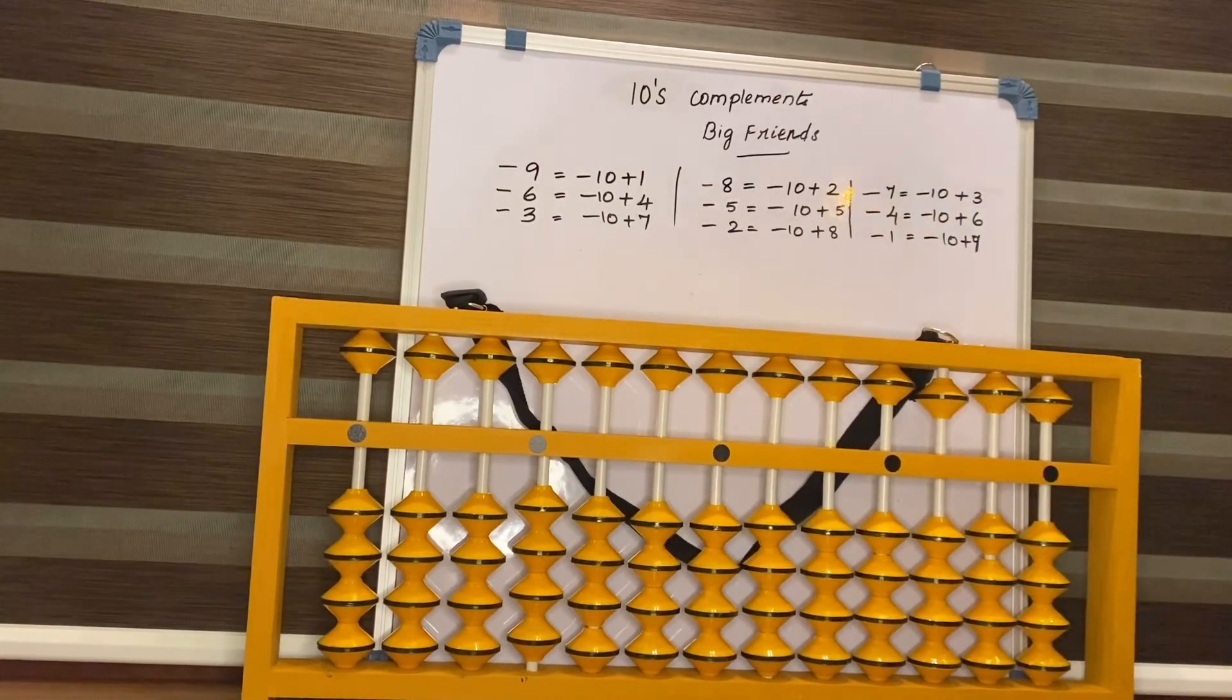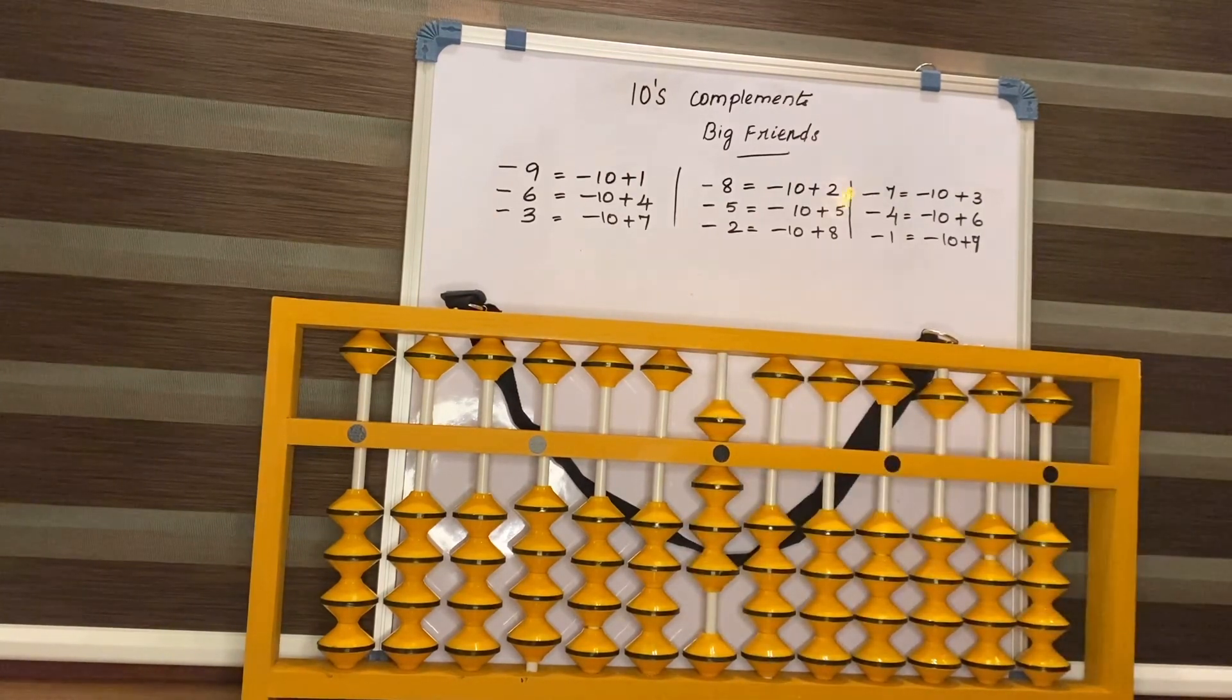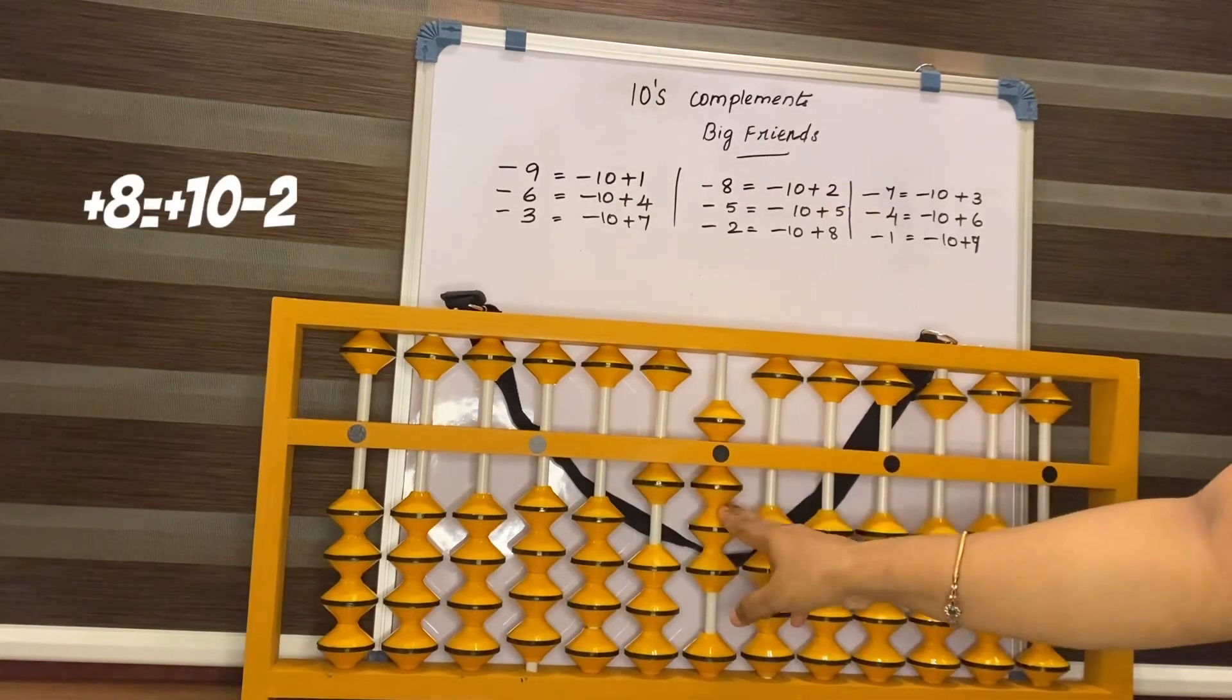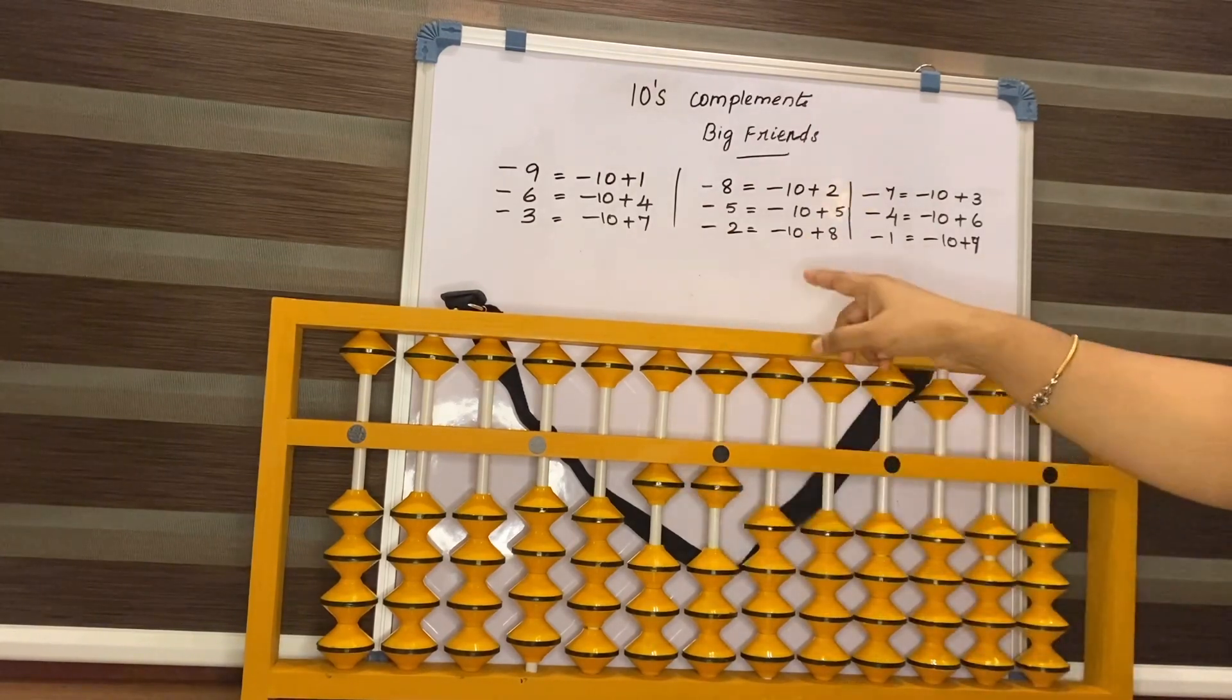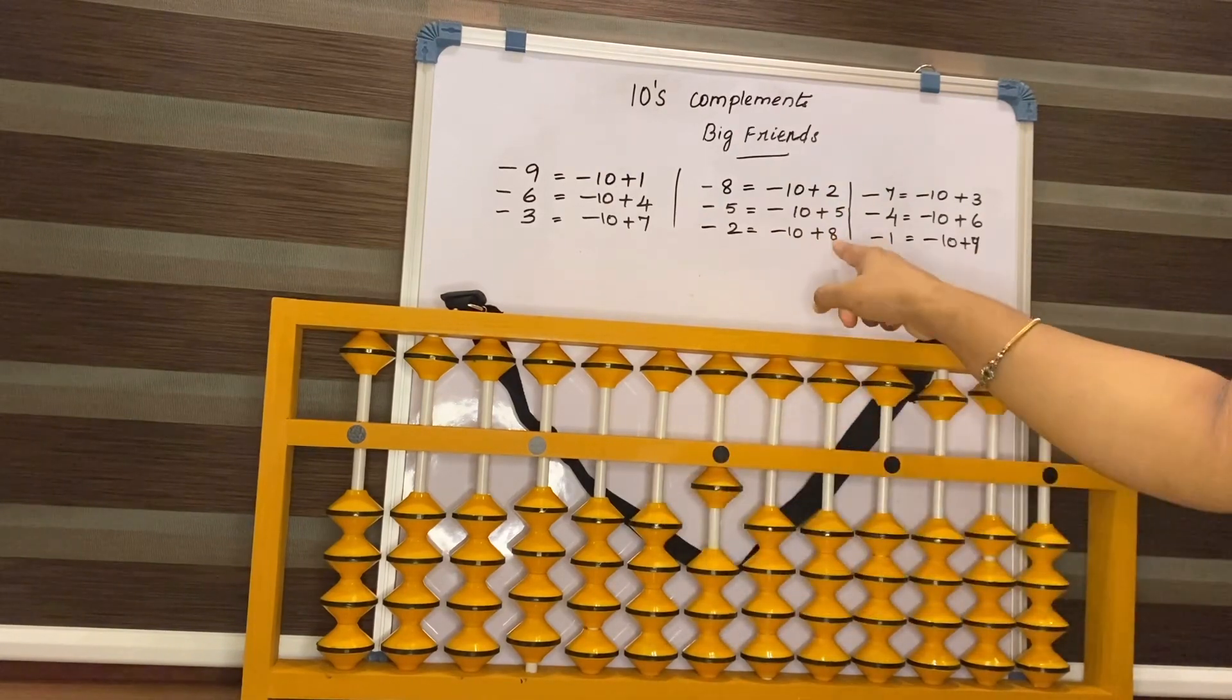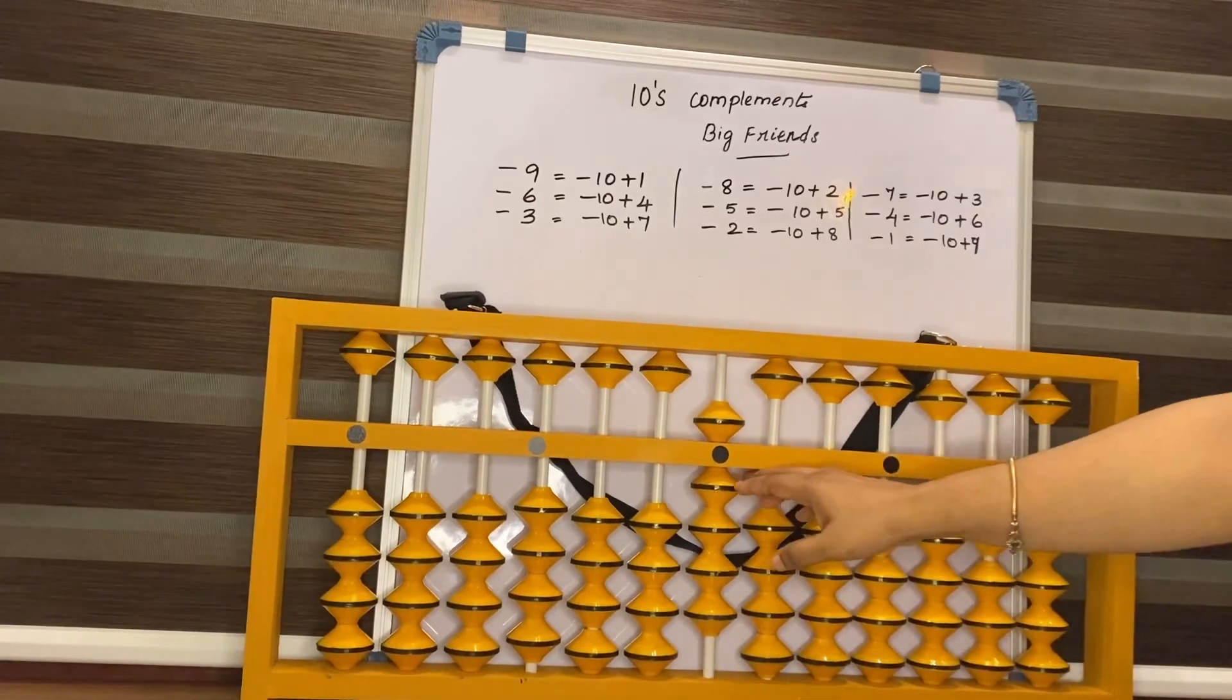One more. 8. Again, 8. How to add 8 here? Add 10, less 2. Less 5, less 2. How to do less 2? Less 10, add his friend 8. What is the answer now? 9.